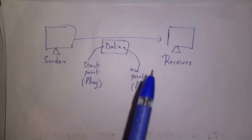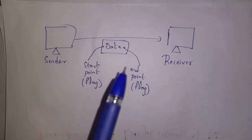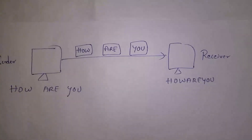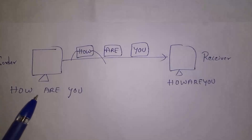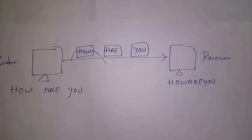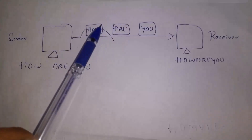Whenever we send data in a frame, we need to mark a start point and an end point so that the receiver understands where our frame starts and where it ends. For example, if I want to send the message 'how are you' to my friend, my complete data is not sent at once. Instead, data is divided into parts — we call each part a packet. So 'how' is one packet, 'are' is one packet, and 'you' is one packet. Each packet is placed in a frame and then transferred to the receiver.